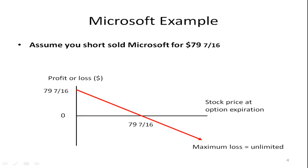If you sell short Microsoft stock for seventy-nine and seven-sixteenths, you're going to get a payoff that looks like this. This is the price you sold it for, so you're hoping the price will fall so you can buy it back at a lower price. If it falls to zero, that would be the best case scenario. You would essentially buy it for zero and sell it for seventy-nine and seven-sixteenths, making seventy-nine and seven-sixteenths per share. You'll notice there's an arrow pointing down here.